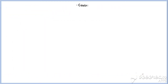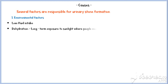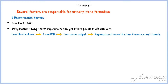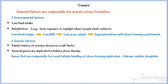Now let's discuss the causes of urinary stone disease. Environmental factors play a major role, including low fluid intake and dehydration — for example, long-term exposure to sunlight where people work outdoors. In both cases, blood volume decreases, resulting in low GFR and low urine output, so urine becomes supersaturated with stone-forming constituents, leaving the person at risk for developing urinary stones. Genetic factors also play a role. Family history of urinary stones is a major risk factor, and several genes are implicated, including genes responsible for renal tubular handling of stone-forming substrates such as calcium, oxalate, and phosphate, as well as inhibitors of stone formation such as citrate and magnesium.